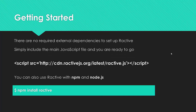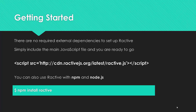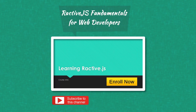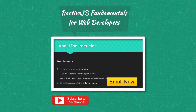Getting started, there are no required external dependencies and no complicated installations. All we need to do is include the script file — you can see the CDN link, or download it and include it directly in your project. You can also use Node.js and NPM: just run npm install reactive. We'll get into that later after looking at the core fundamentals and syntax. That's a quick summary of what Reactive is and how it works, and as we move along we'll cover these aspects more thoroughly. See you in the next video.